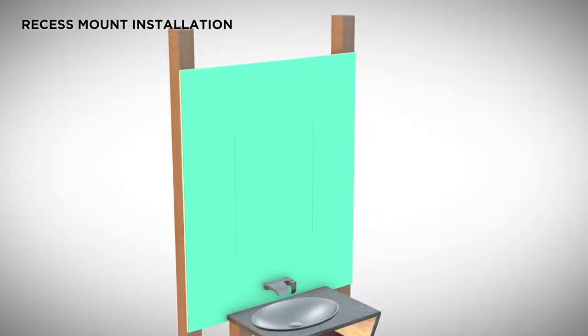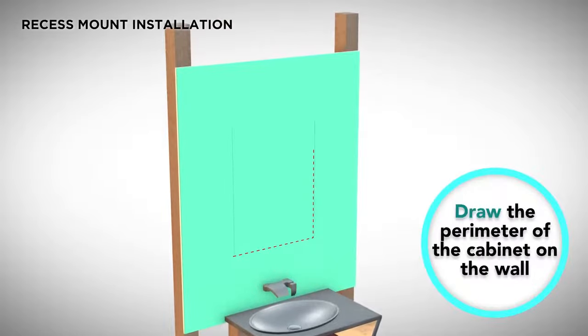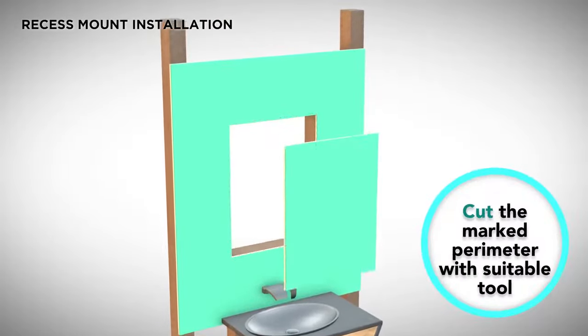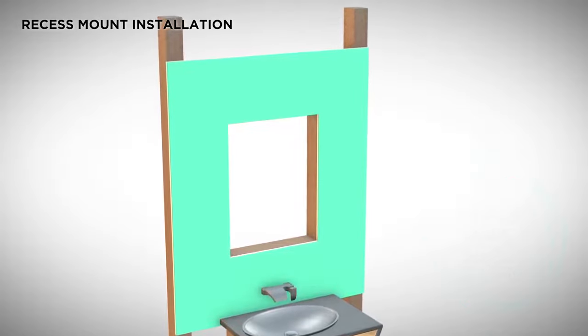Once sheetrock or wonderboard is covering your walls, measure out the opening for the cabinet and cut out the opening. You are now ready to install your cabinet.